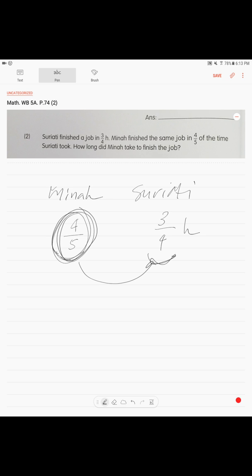We always multiply, right? Four-fifths of three-fourths of an hour. This is basically 'of'. Four-fifths of the three-fourths is, do your math, three-fifths hour. And this is your answer: Mina took three-fifths of an hour to finish the job.